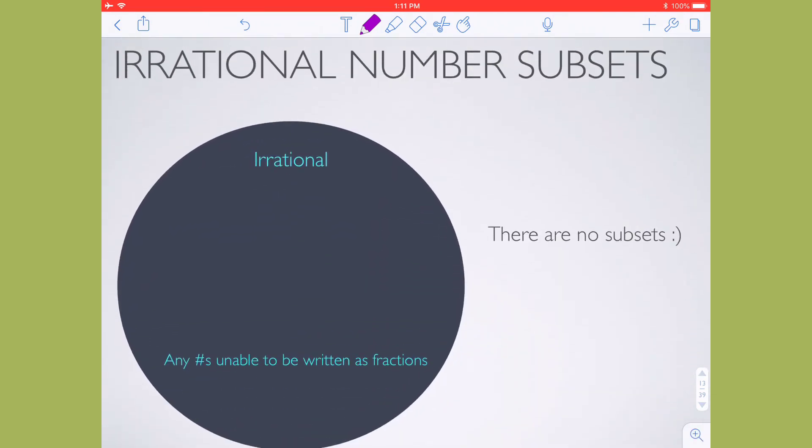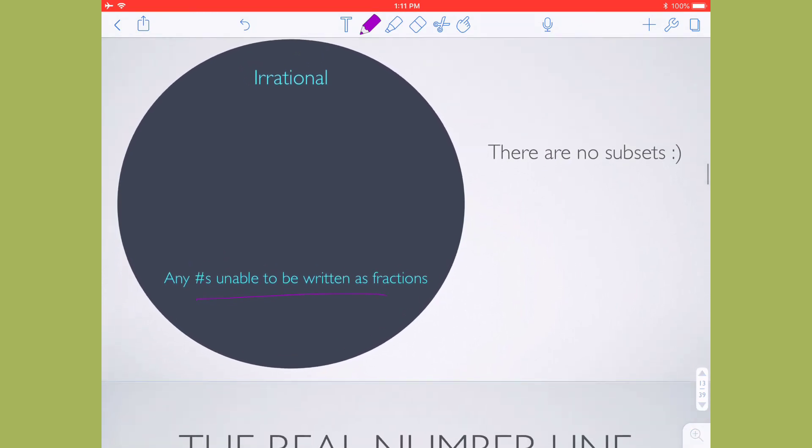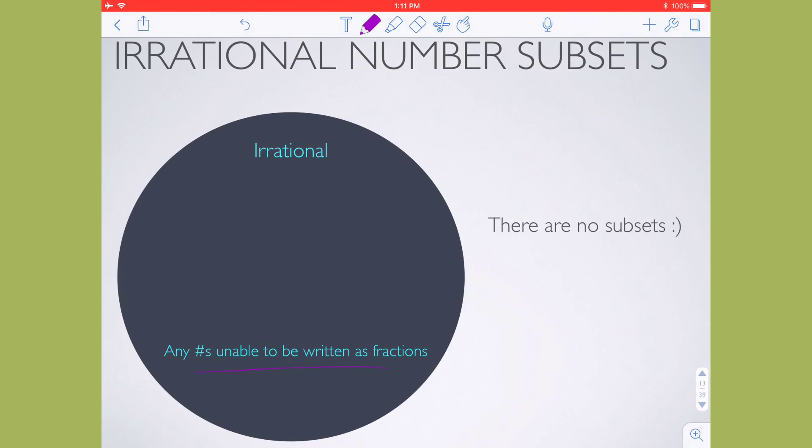Irrational is super easy, because it's just your numbers that cannot be written as a fraction, and there are no subsets that are associated with that. I hope you found this video helpful. As always, if you have any questions, please don't hesitate to reach out.